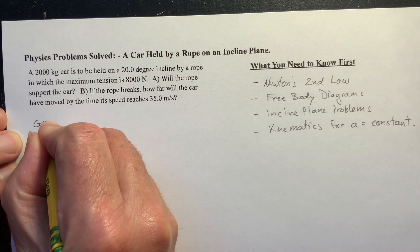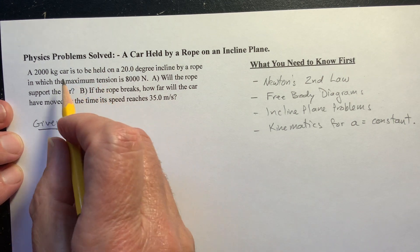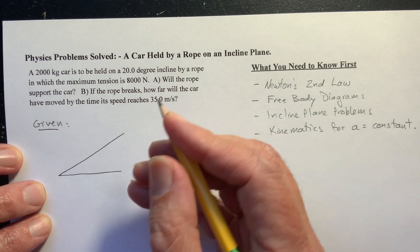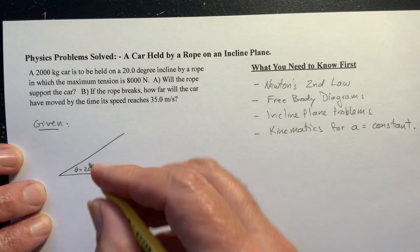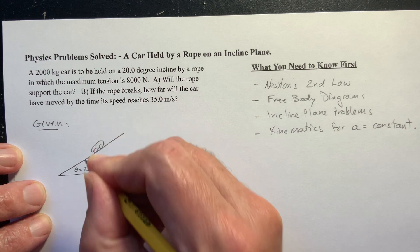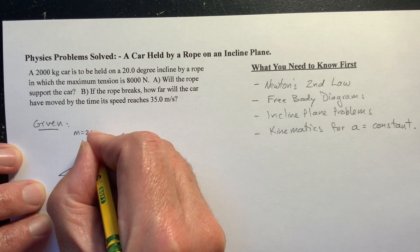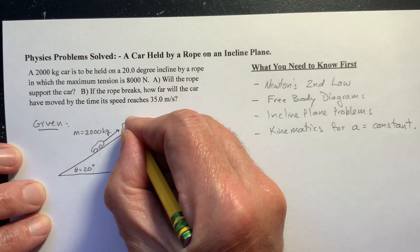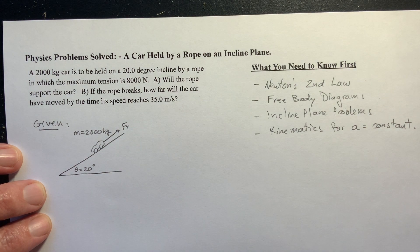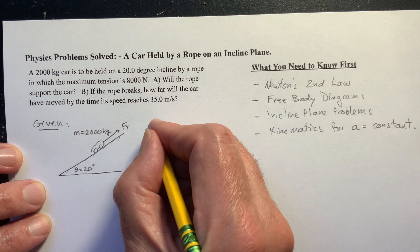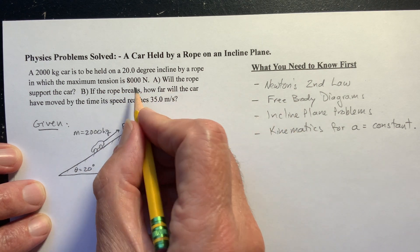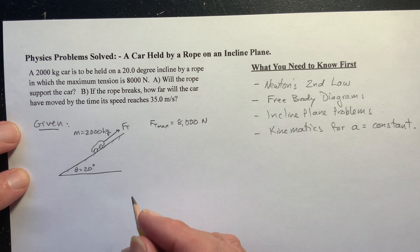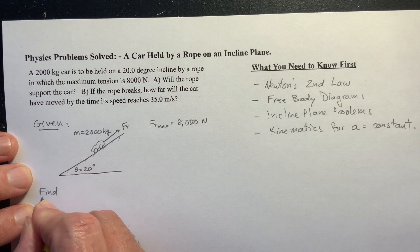So let's figure out what's given here. We've got a 2,000 kilogram car. It's on a 20-degree incline. So let me go ahead and draw that. So I'll draw my little car on here. And the car has a mass of 2,000 kilograms. Now we're pulling on it with a rope. And I'm going to call that tension force F sub T for tension. And it's said that the maximum tension force that that rope can take is 8,000 newtons.